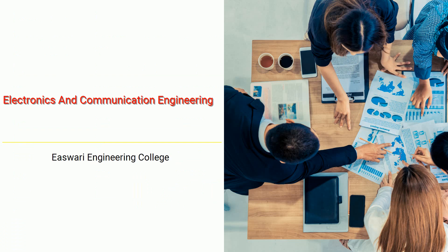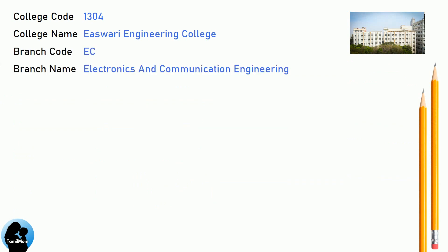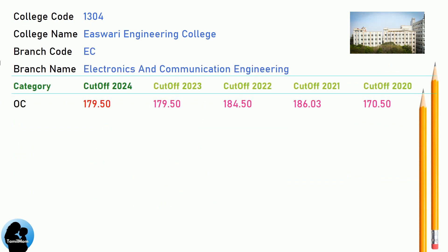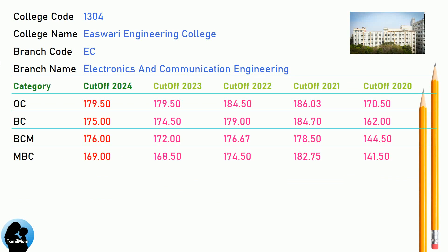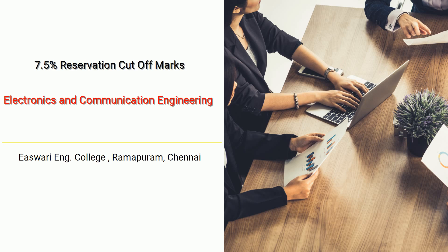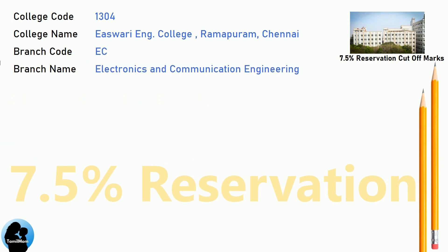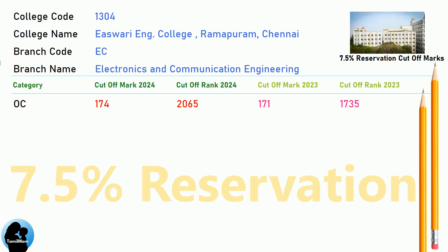DNA Cut-Off for Eshwari Engineering College in Electronics and Communication Engineering. DNA 7.5 Reservation Cut-Off for Eshwari Engineering College in Electronics and Communication Engineering.